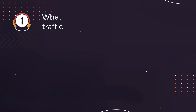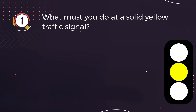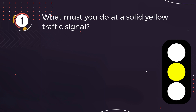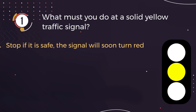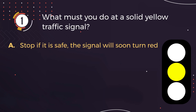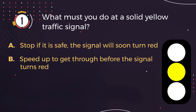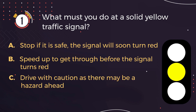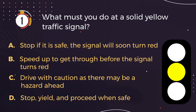Number 1. What must you do at a solid yellow traffic signal? A: Stop if it is safe — the signal will soon turn red. B: Speed up to get through before the signal turns red. C: Drive with caution as there may be a hazard ahead. D: Stop, yield, and proceed when safe.